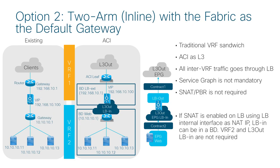Option 2 is fabric as the gateway. In this design, we have two VRFs — one for external and the other for internal — and the load balancer is between the two VRFs. The L3 bridge domain in the internal VRF is for servers, and the L3 bridge domain in the external VRF is for the external side of the load balancer.